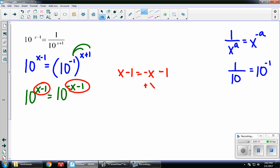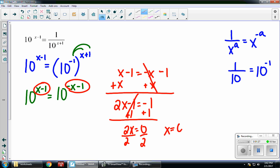I'm going to solve for x by adding x on both sides. So I get 2x minus 1 equals negative 1. Add 1 on both sides. So 2x equals 0. Divide by 2. x equals 0. And there's my answer.